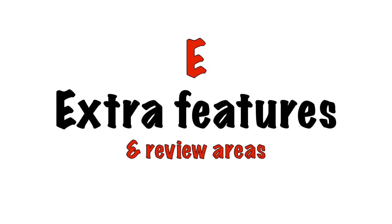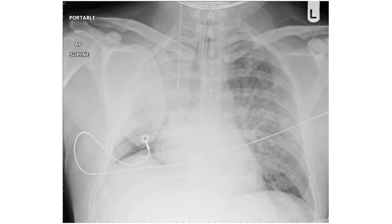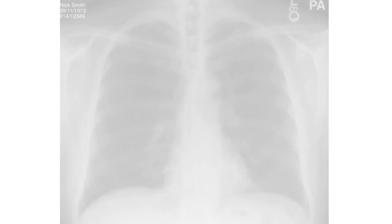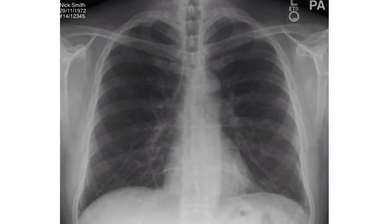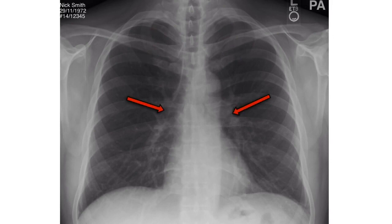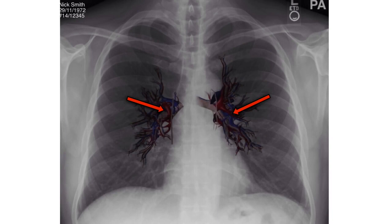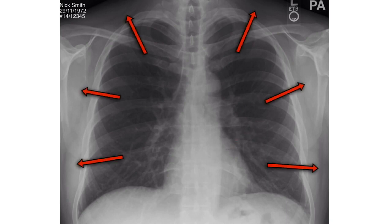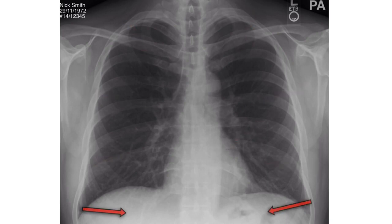E stands for extra features and review areas. Look for evidence of medical intervention — for example, monitoring equipment, lines, and tubes — and check whether they are correctly positioned. If the chest X-ray appears normal so far, pay attention to the review areas: the lung apices, the hilar regions (made up of the bronchi and major pulmonary vessels — the left hilum is higher than the right or at the same level, and they should be symmetrical in size and density), behind the heart, the soft tissues, and finally review under the diaphragm.